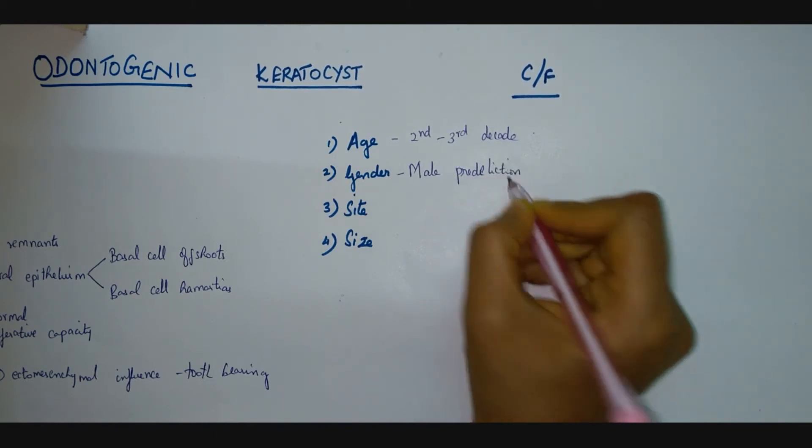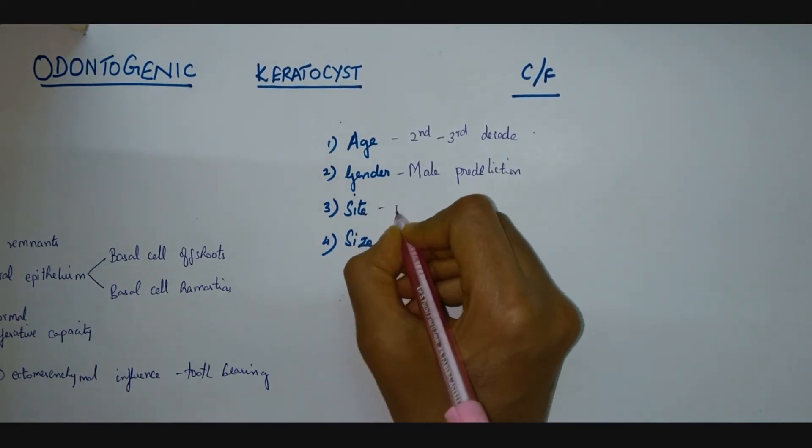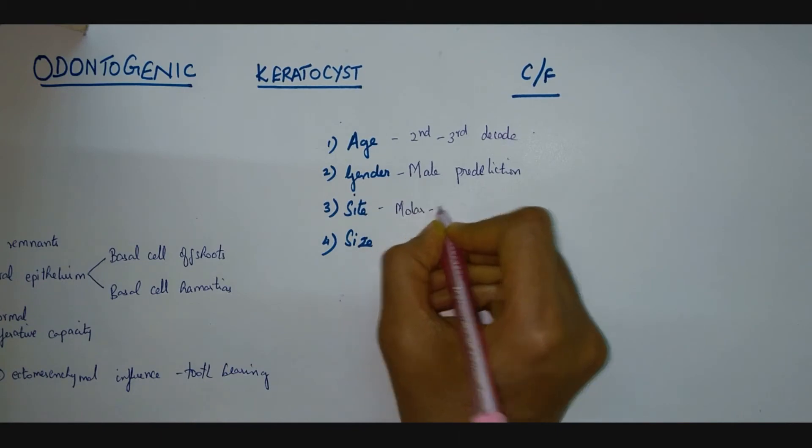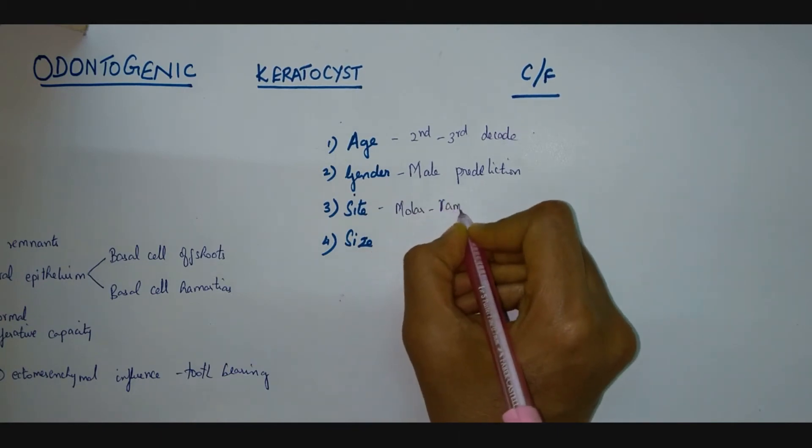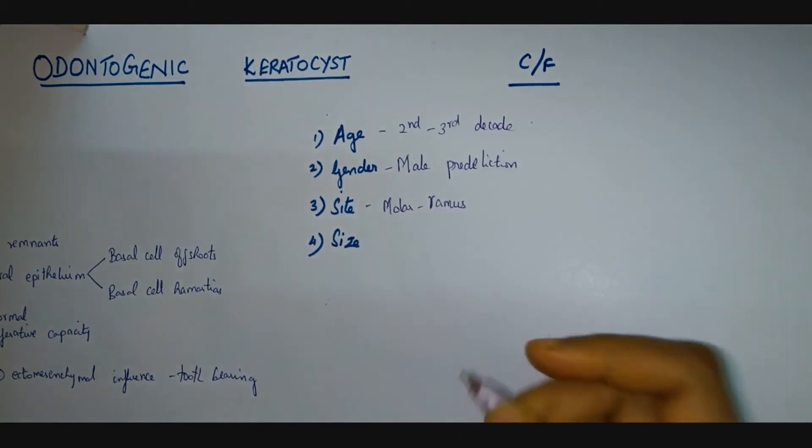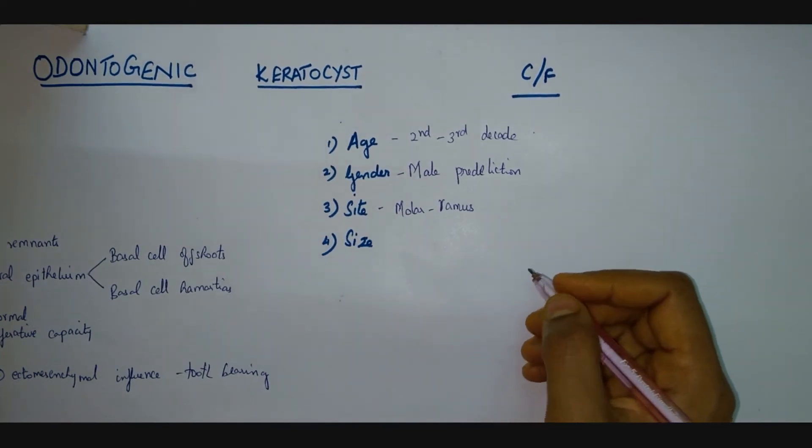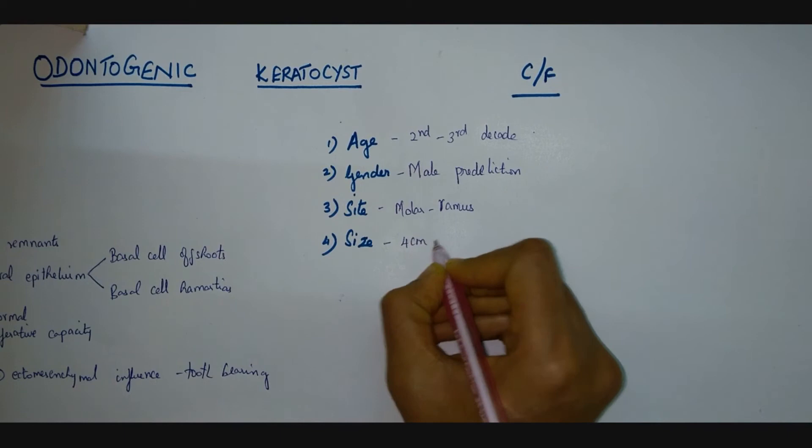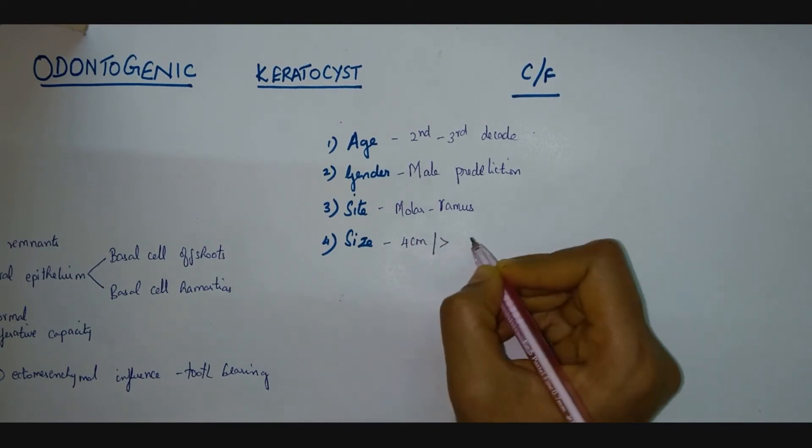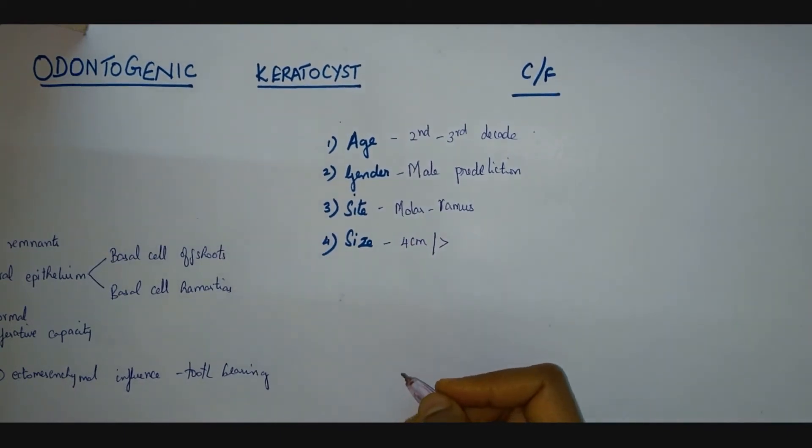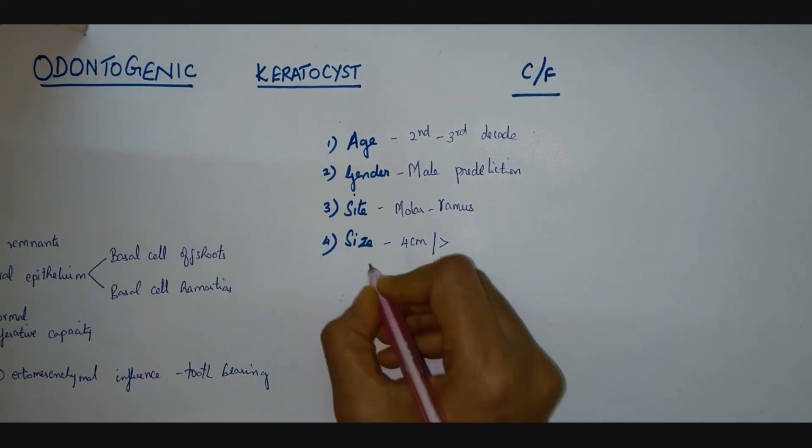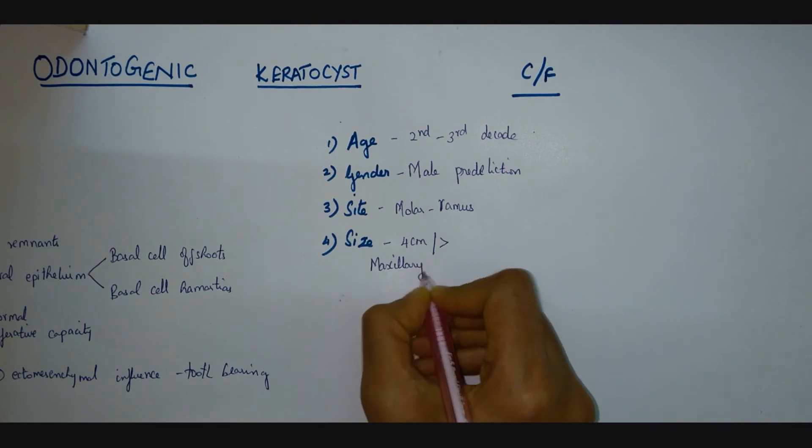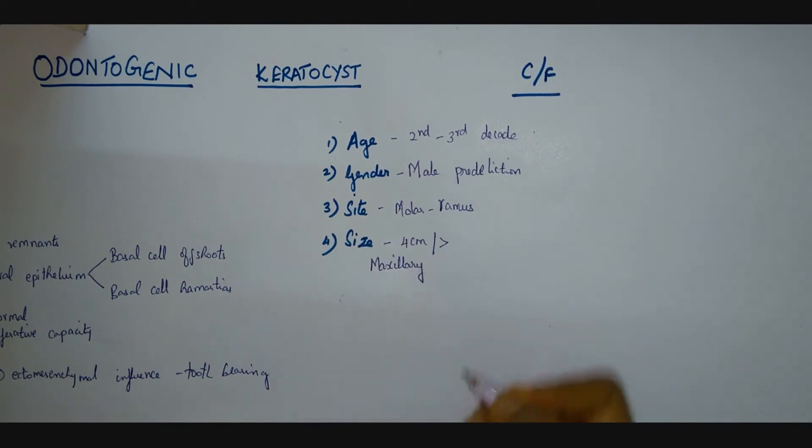What is the most common site? The mandibular molar ramus region, the mandibular posterior, that is the molar ramus region. Moving on to the size, usually the cyst is four centimeter or greater than four centimeter. But in case of the maxillary lesions, the cyst is usually diagnosed even in a smaller size because it has more tendency to get infected.